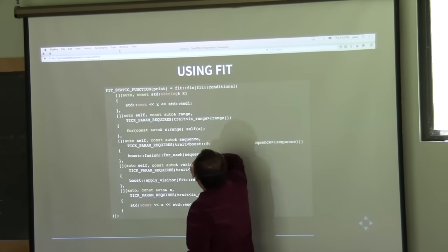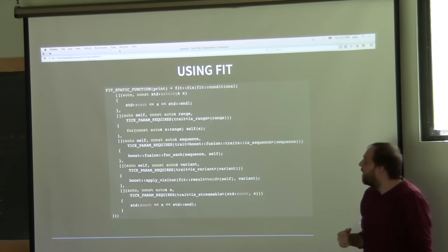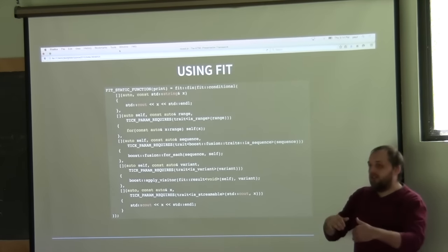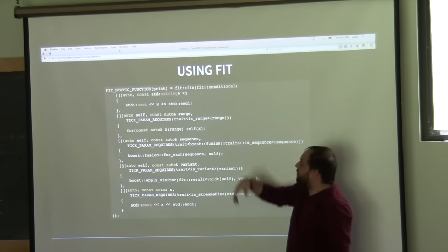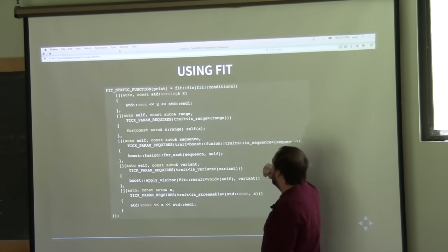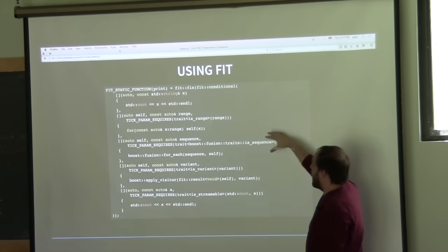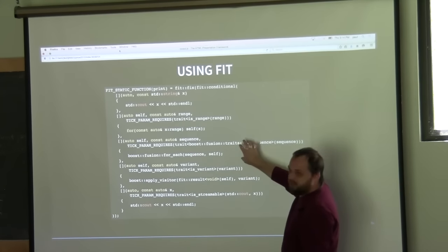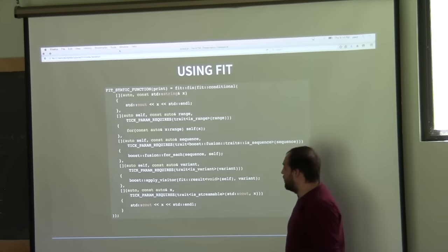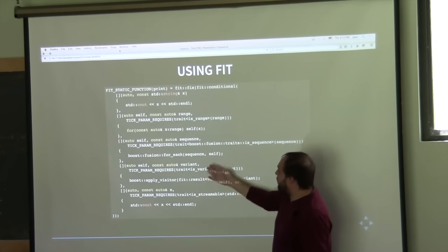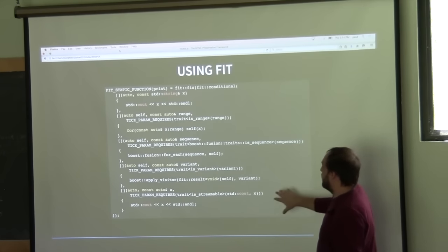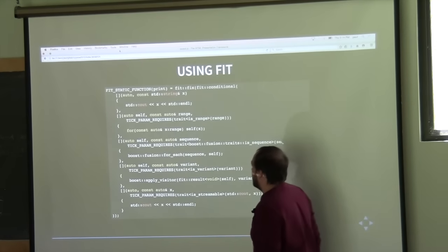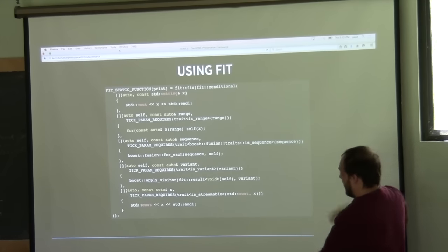Using 'fix' and 'conditional' together, all we need to do is order our functions in the right order, and we don't actually have to negate any of the other traits. Because I put range first and sequence second, if we reach sequence, we know it's not a range — so there's no ambiguity. Similarly, if we reach the streamable case, we know none of the other requirements were met. Then we just call 'self', which refers back to itself using the fixed point combinator. This provides a much cleaner way of dealing with it.